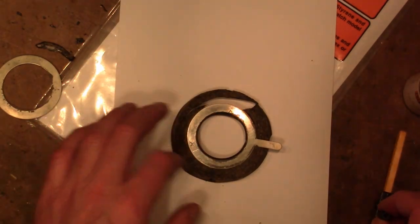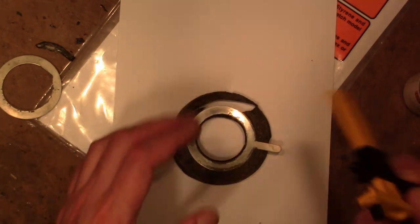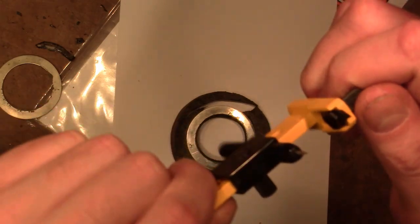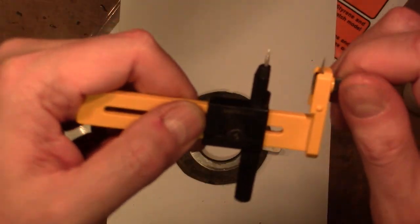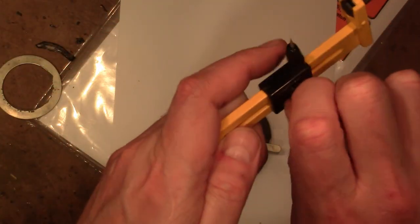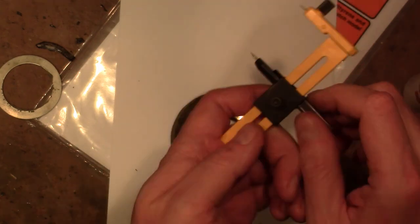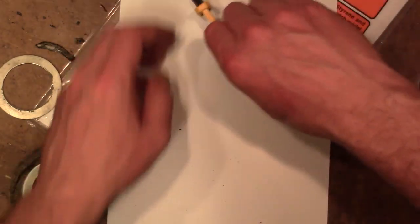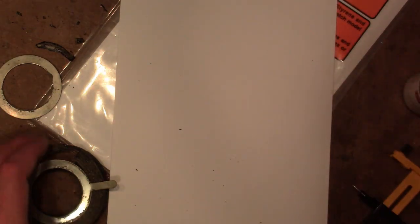So I need two basic things. I need a circle, and for that I have this circle cutter. It's got a sharp center point and a sharp cutting blade. Works like a compass. You can adjust this for the diameter. And then you hold it down and you spin it. And work it around a few times and this blade will cut through the styrene.